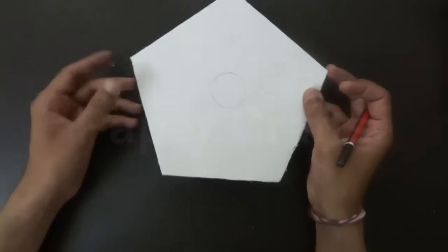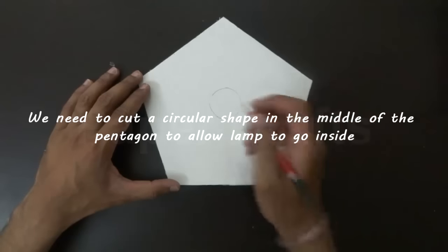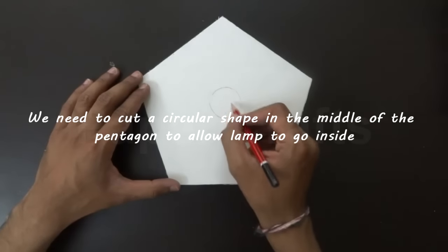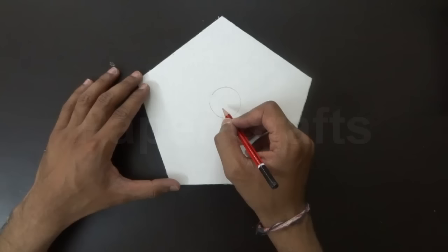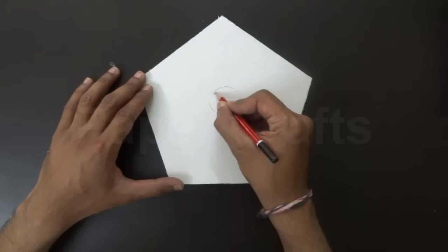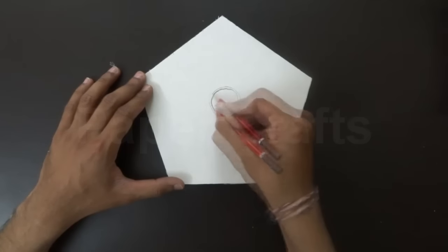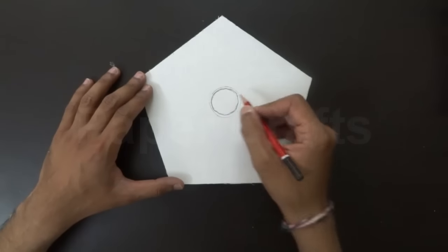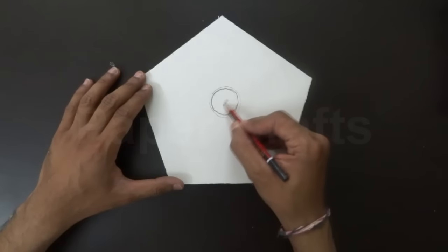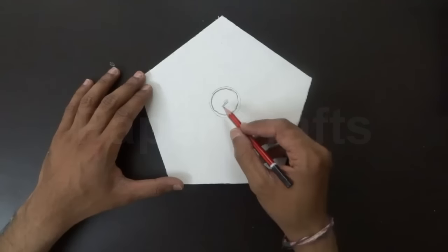Once we have the pentagonal shape cut out from the cardboard, we need to make a circular shape in the middle of the pentagon so as to allow the lamp to go into the lampshade. Make a circular shape in the center and cut out this internal part from the pentagonal cardboard.